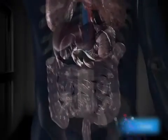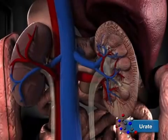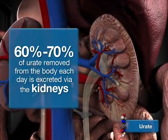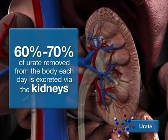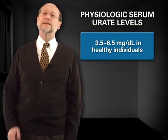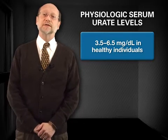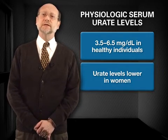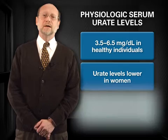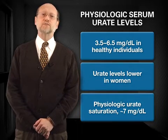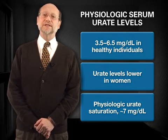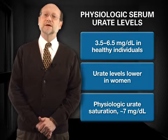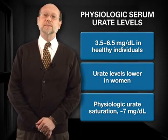Normally, urate excretion is performed largely through the intestines and the kidneys, with the latter responsible for 60 to 70 percent of the total uric acid removed from the body each day. Serum uric acid concentrations in healthy individuals vary between 3.5 and 6.5 milligrams per deciliter, with women showing slightly lower levels than men. The high end of this range approaches the threshold for urate saturation in biologic fluids, or roughly 7 milligrams per deciliter.